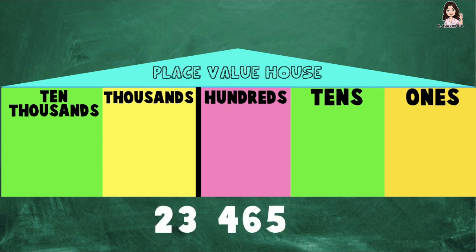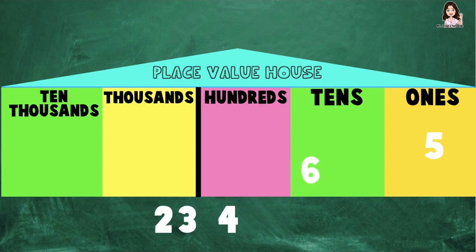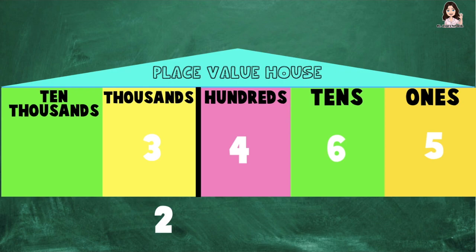For example, I have 23,465. In identifying the place value, we are going to start from right to left. Since digit 5 is the first digit from the right, digit 5 is at the ones place. Digit 6 is at the tens place. Digit 4 is at the hundreds place. Digit 3 is at the thousands place. And digit 2 is at the tens thousands place. So these are the place values of digits in 23,465.